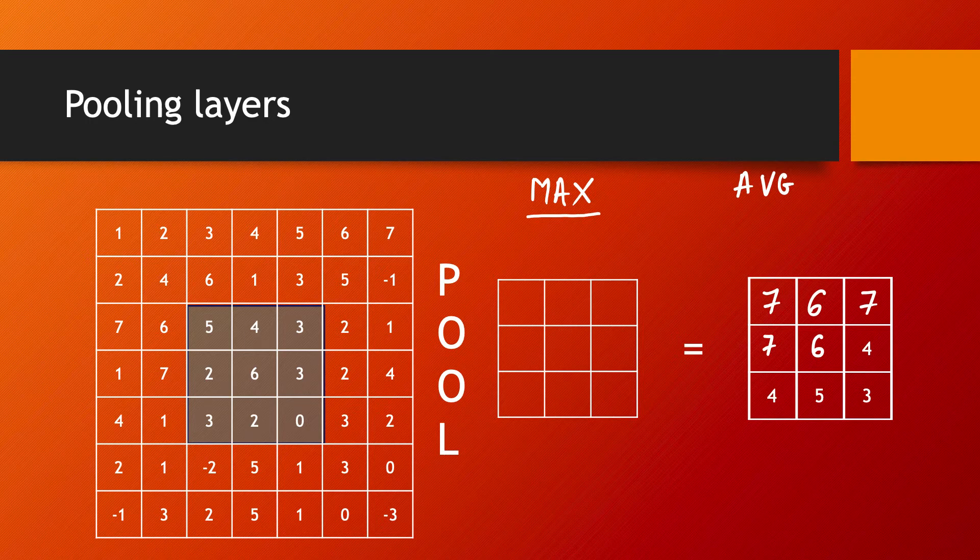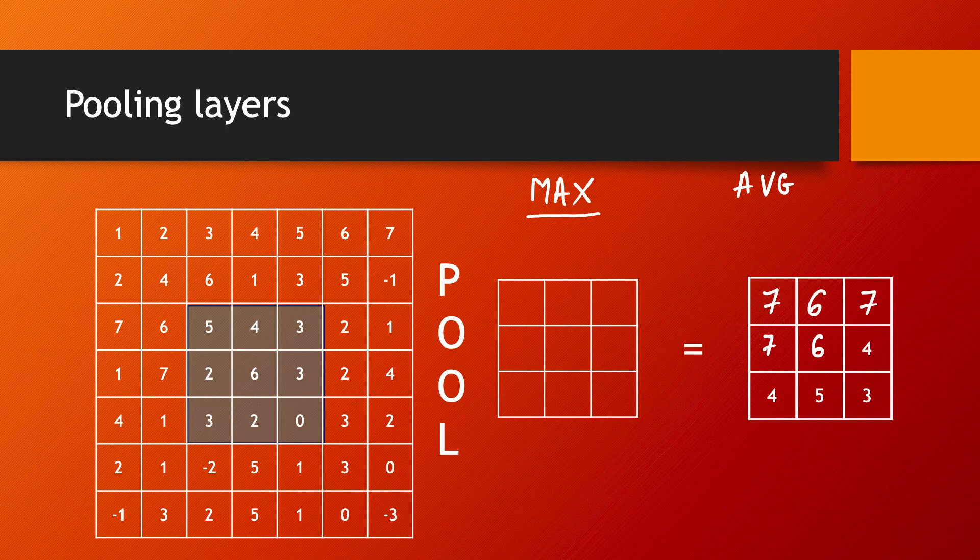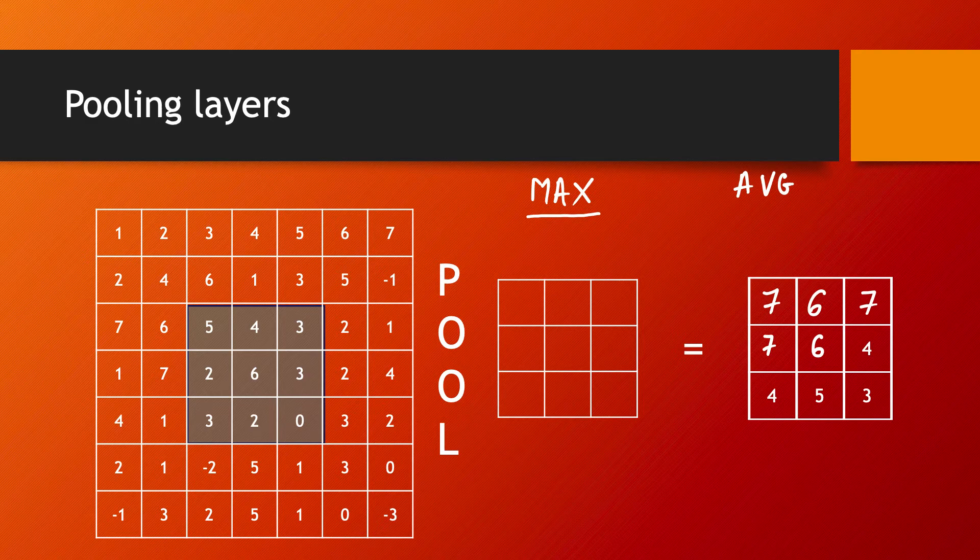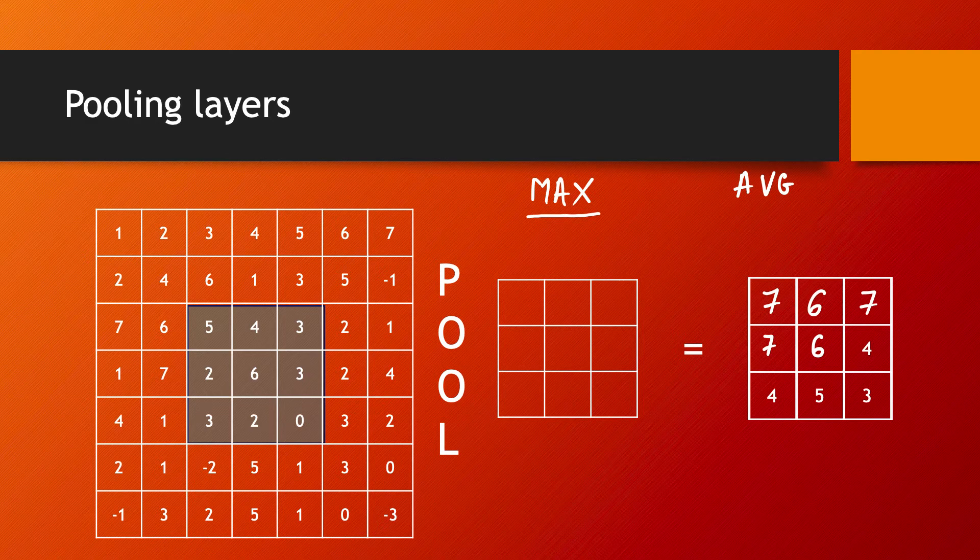The reason why pooling layers are useful in convolutional neural networks is maybe not theoretically clear in terms of the exact contribution to the computation done by the convolutional neural network. The intuitive reason why people use it and they seem to make a difference in the training of a convolutional neural network is that they shrink your input size, and so that leads to a faster training for your neural network.